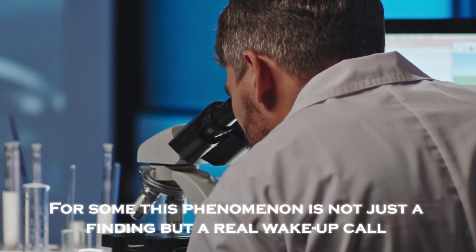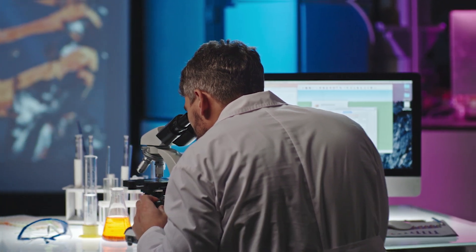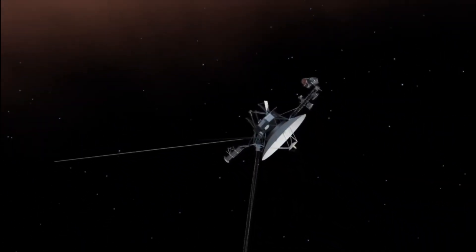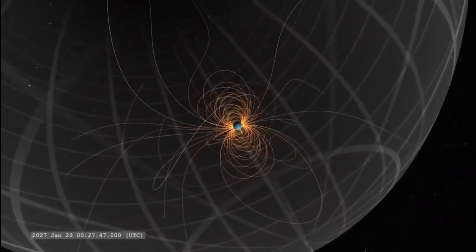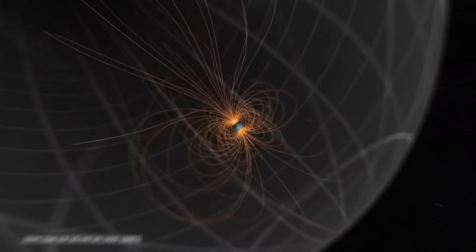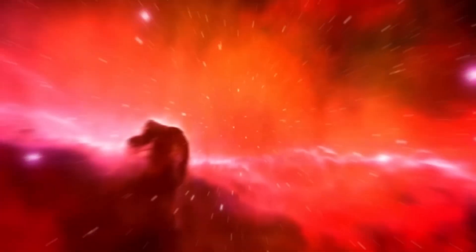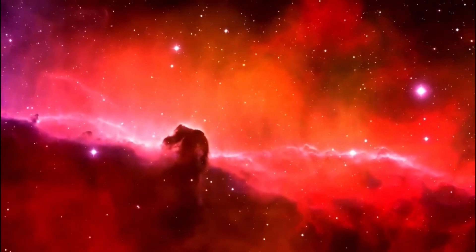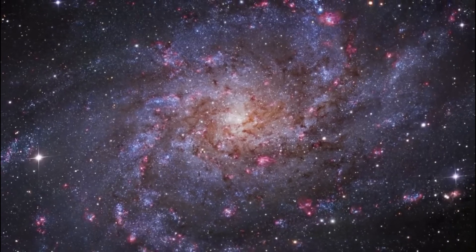For some scientists, this phenomenon is not just a finding, but a real wake-up call. Voyager 1 may be discovering an energy grid or something similar at the edge of our solar system. If these energy streams exist, we are seeing for the first time how the solar system connects to the galaxy on a scale we had not anticipated. This could radically change our understanding of energy in the universe.